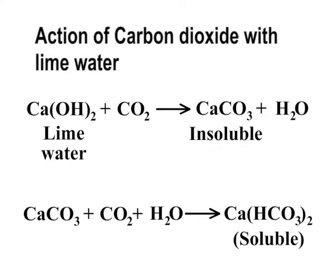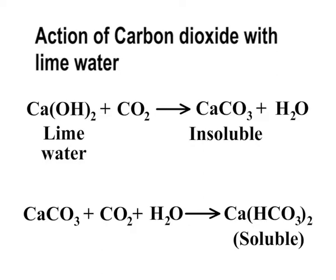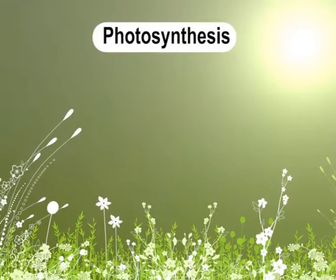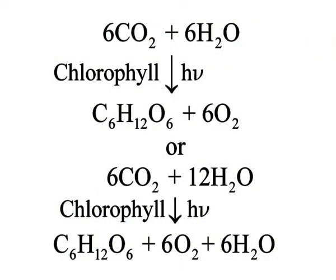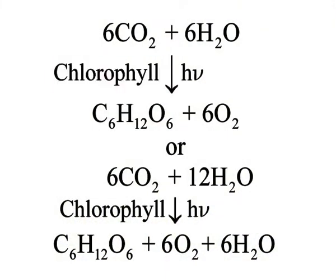When carbon dioxide is passed through lime water, milkiness appears due to the formation of insoluble calcium carbonate. However, on passing the gas in excess, milkiness disappears because insoluble calcium carbonate changes to soluble calcium bicarbonate. Carbon dioxide is present in the atmosphere at about 0.03% by volume. Green plants use the green colouring matter known as chlorophyll to carry out the process of photosynthesis, and as a result carbon dioxide is converted into carbohydrates.